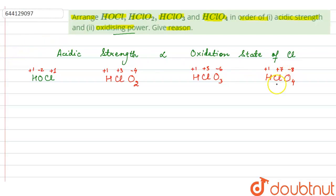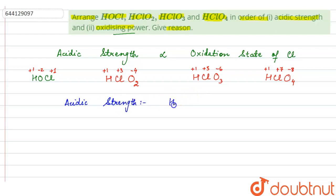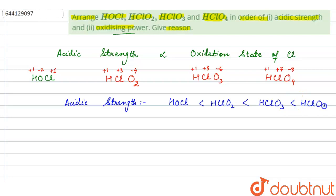In HClO₄, chlorine is present in its highest oxidation state, so its tendency to attract and accept electrons will be highest, and its acidic strength will be highest. The order of acidic strength will be: HOCl (least acidic, lowest oxidation state of chlorine) < HOClO₂ < HOClO₃ < HOClO₄.